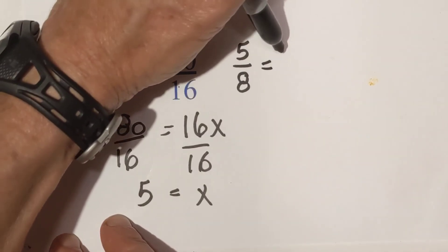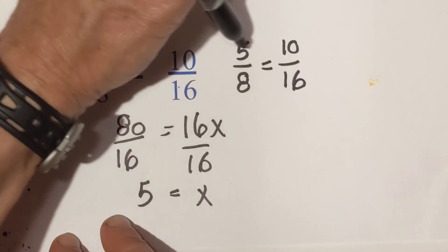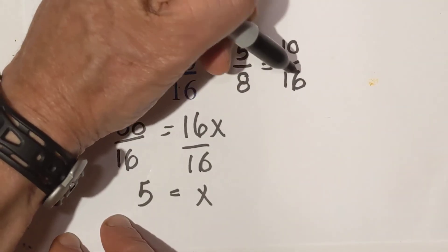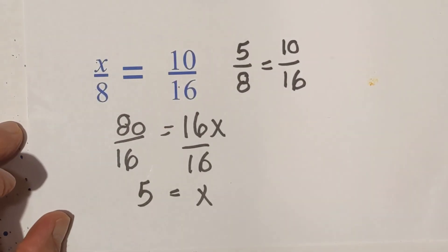5 eighths is equal to 10 sixteenths. 5 goes into 10 two times. 8 times 2 is 16. Hope that helped. And remember, kindness multiplies kindness. Be kind to someone today.